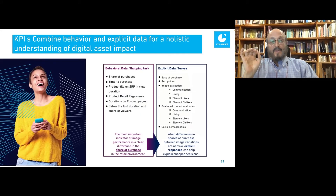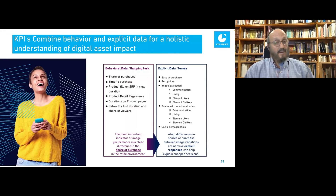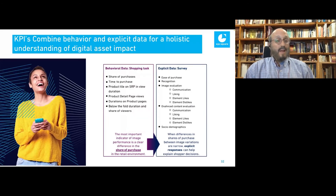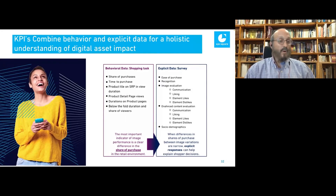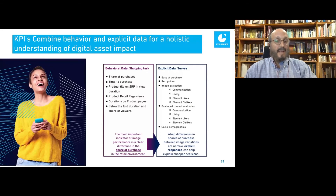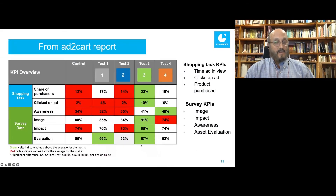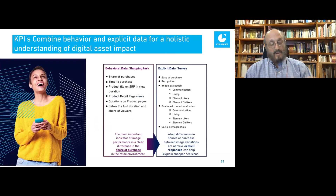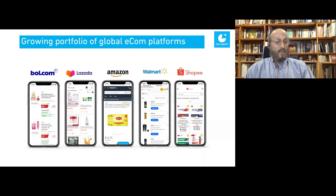The KPIs of combining social media and e-commerce are very exciting. We're measuring share of purchase — in most cases the main thing people are interested in — as well as time to purchase, how long they viewed the product tile on the search results page, how long they viewed the product detail page, whether they clicked through from the search results page, whether they spent time with content below the fold, ease of purchase, recognition, image evaluation, enhanced content evaluation, and sociodemographics. When the behavioral data is clear, it's easy to make a decision; when it's close, the survey helps determine which ad to go with.